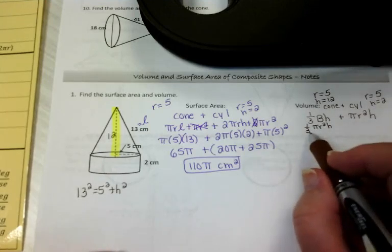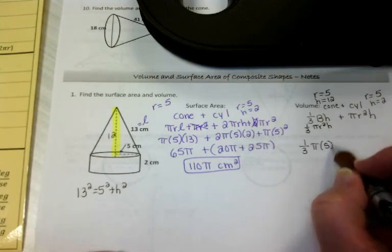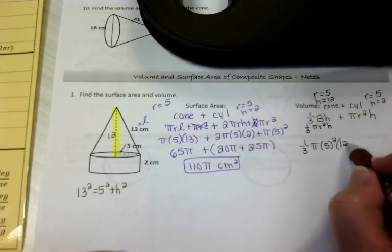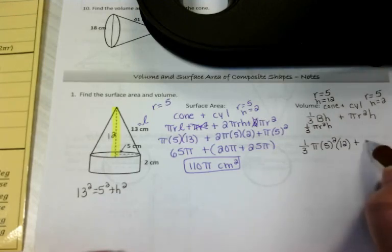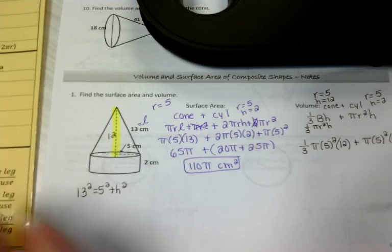So let's plug our numbers in. 1/3 pi radius squared h plus pi radius squared h. And now, just as before, we put it into our calculator.